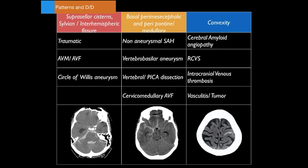Pattern two is basal perimesencephalic, peripontine, and perimedullary cistern hemorrhage — subarachnoid blood within the posterior fossa. The most common cause is non-aneurysmal subarachnoid hemorrhage, although vertebrobasilar artery aneurysms and dissections involving the PICA and vertebral artery are also common. Pattern three is when bleeding is primarily restricted along the convexities of the brain, where the etiology is entirely different.